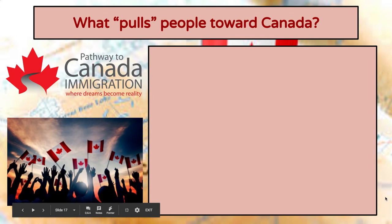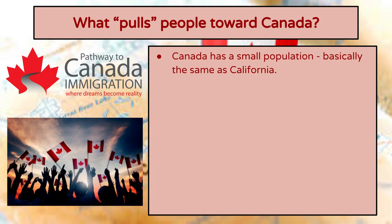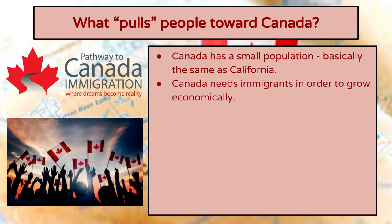Next we're going to talk about our neighbors to the north in Canada — what pulls people towards Canada. Canada is actually a very popular destination for immigrants, and there are lots of good reasons for that. The first is that Canada has a small population; the entire population of Canada is basically the same as the population of California. The United States has ten times more people than Canada, which means Canada needs immigrants in order to grow economically — it is literally a matter of need.